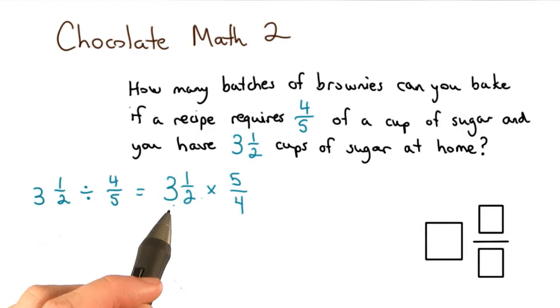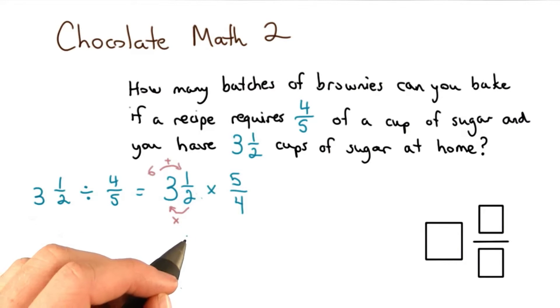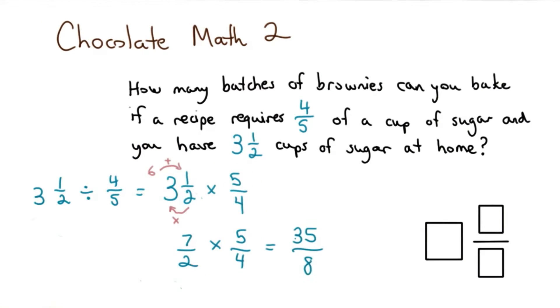This 3 1⁄2 is a mixed number and doesn't help me. I'm going to change it to an improper fraction. 2 times 3 is 6, and 6 plus 1 is 7. So I have 7/2 times 5/4, or 35 divided by 8. 7 times 5 is 35, 2 times 4 is 8.